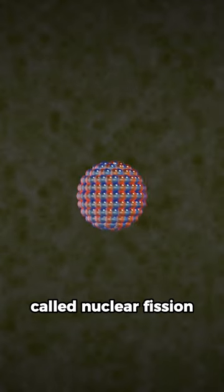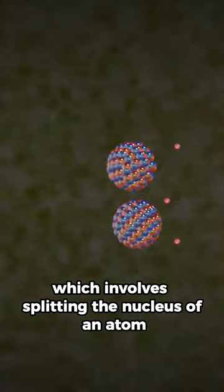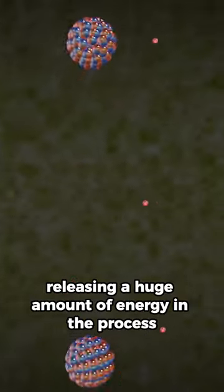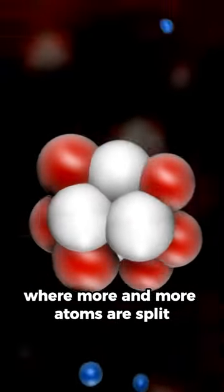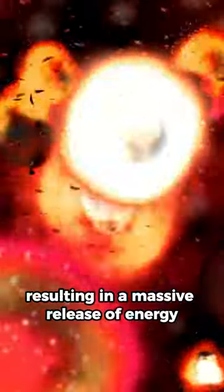An atomic bomb works by a process called nuclear fission, which involves splitting the nucleus of an atom into two smaller nuclei, releasing a huge amount of energy in the process. This energy creates a chain reaction, where more and more atoms are split, resulting in a massive release of energy in the form of an explosion.